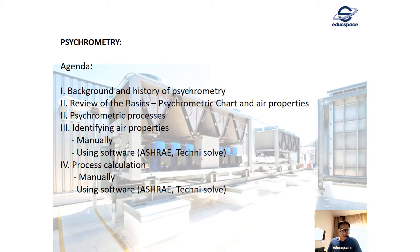We will do some exercises by determining air properties manually using the chart and using different software, including Carrier HAP and some free software like Technosoft. Finally, we will perform some process calculations — we'll do manual calculations and match them with the software results from Carrier HAP and Technosoft.